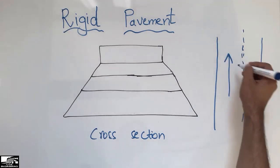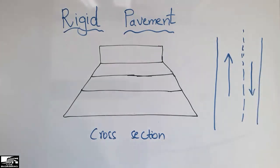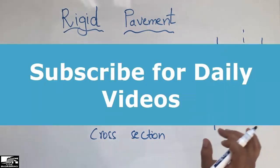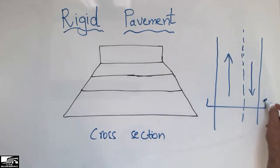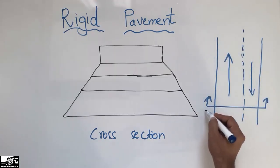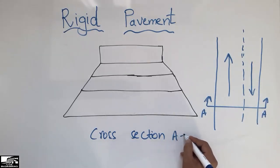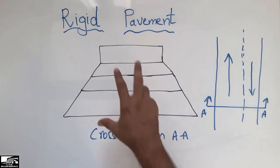The vehicle moves in one direction on one side, and on the other side the vehicle moves in the other direction. This is called the longitudinal section of the road or the pavement. If we cut here in this way — let's call this cut AA — this is the cross-section AA of this road, which is the cross-section of this rigid pavement.